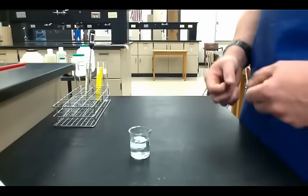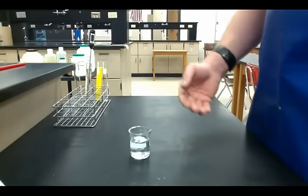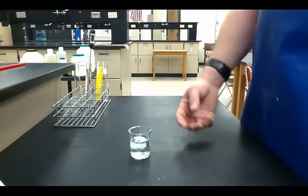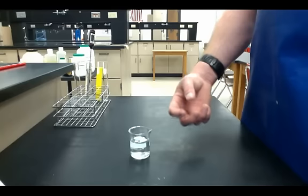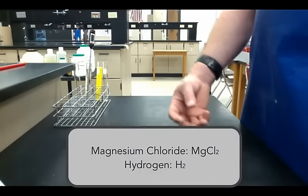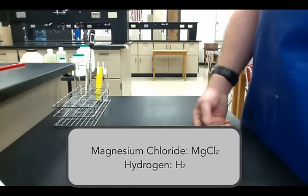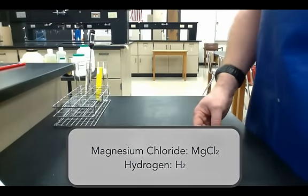A property, a chemical property of magnesium, is that it reacts with acid, or the hydrogen chloride, to form magnesium chloride and hydrogen gas. And that's the bubbling that you saw, hydrogen gas.